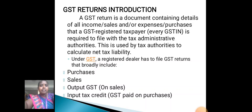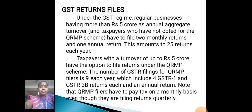Under GST, a registered dealer has to file GST returns that broadly include purchases, sales, output GST, and input tax credit. Under the GST regime, regular businesses having more than 5 crore as annual aggregate turnover and taxpayers who have not opted for the QRMP scheme have to file 2 monthly returns and 1 annual return.